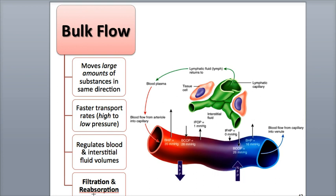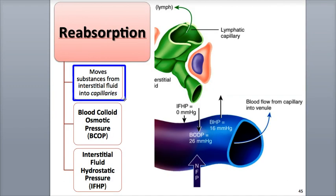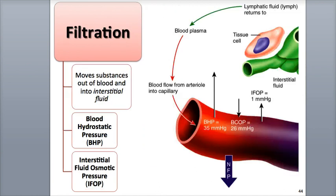There are two components to bulk flow: filtration and reabsorption. Filtration is the transport of solutes and fluid out of the blood capillaries and into the interstitial fluid through a difference in pressures. Reabsorption is the opposite movement, transporting substances via pressure difference from the interstitial fluid into the blood capillaries.